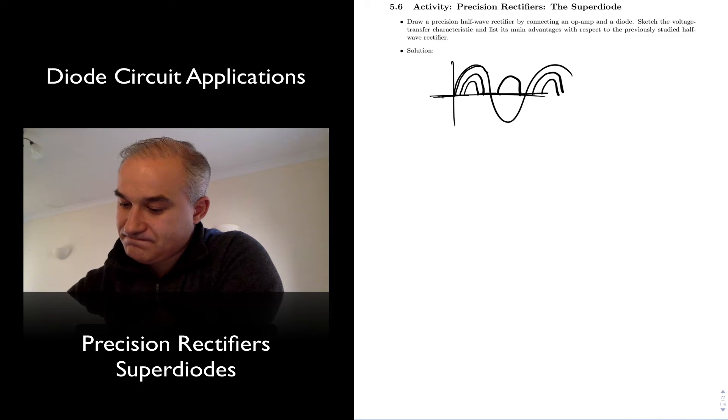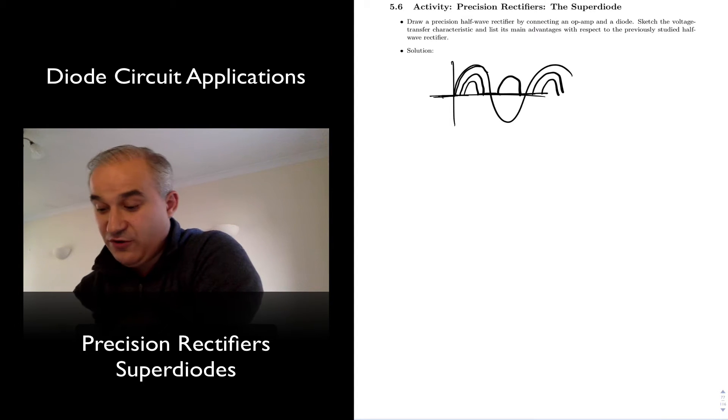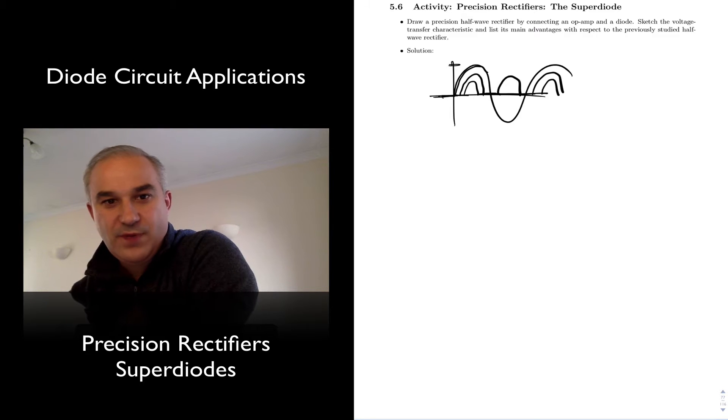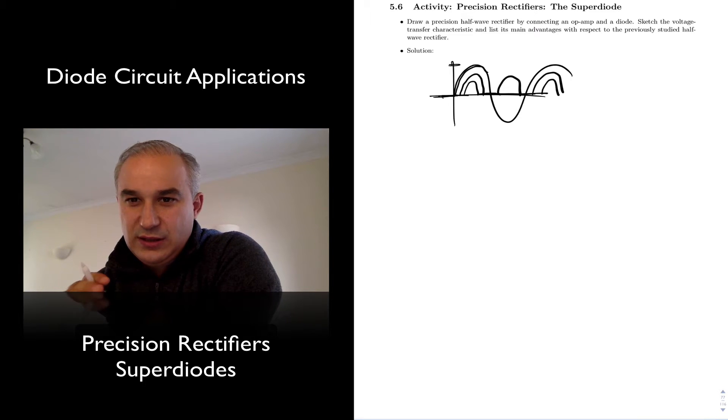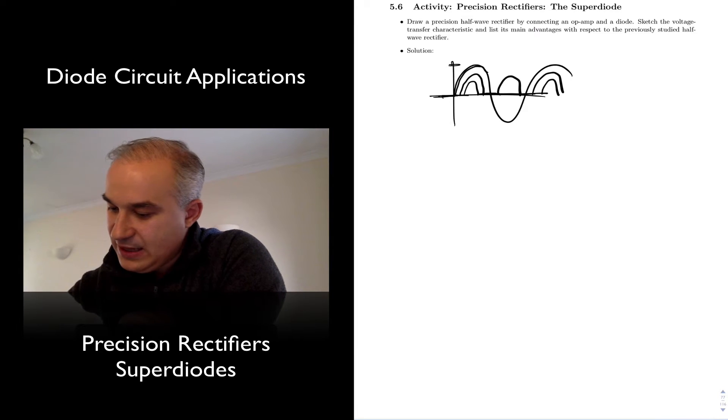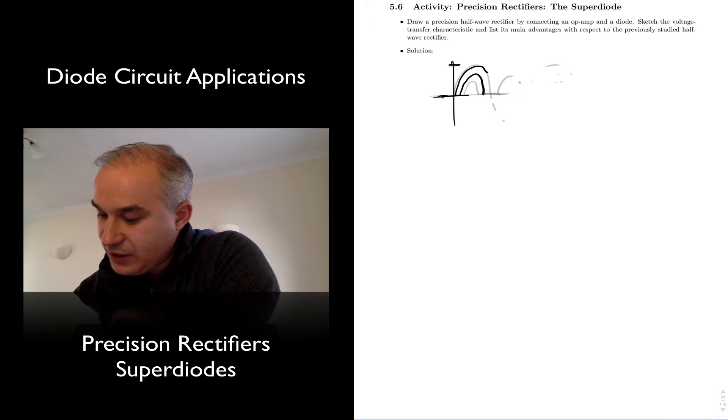Now, you may tolerate that in applications where the voltage levels are much higher than a diode drop, but when you are working with low voltage levels, you cannot tolerate those diode drops. And so, we need to do a precision circuit, and we can do that with an operational amplifier and a diode.